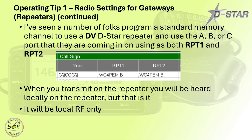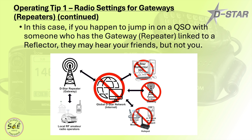I've seen a number of folks program a standard memory channel to use a DV DSTAR repeater and use the A, B, or C port they're coming in on as both RPT1 and RPT2 set to that local port. In this particular case, RPT1 and RPT2 are both set to WC4PEMB — the UHF port on the WC4PEM gateway. But when you transmit on the repeater, you'll be heard locally on the repeater only — it will be local RF only. So when RPT1 and RPT2 are both set to the local port, if you jump in on a QSO with someone who has your local gateway linked to a reflector, they may hear your friends but not you.